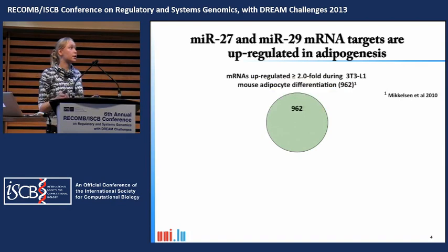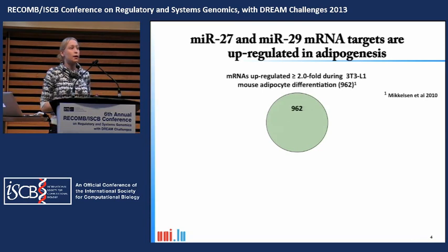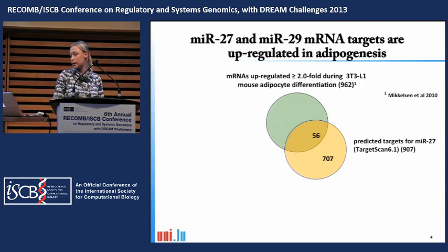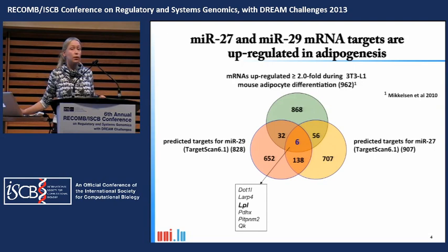MicroRNA targets suppressed in pre-adipocytes should be upregulated during adipogenesis and highly expressed in mature adipocytes. We took a published dataset from the group of Jeffrey Rosen, with mRNA expression levels highly upregulated in differentiated 3T3-L1 fat cells. We then took target predictions from TargetScan for the miR-27 and miR-29 families. Overlaying these gene lists yielded six genes upregulated during adipogenesis and targeted by both microRNA families.